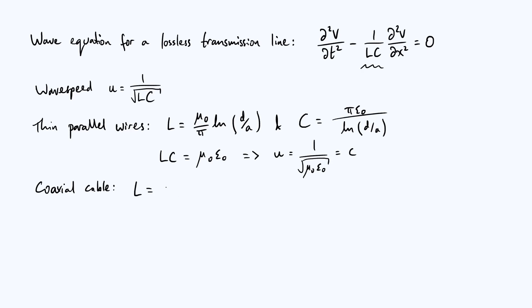The inductance of a coaxial cable is μ₀/(2π) natural log of b over a where b and a are the radii of your outer and inner cylindrical conductors respectively and the capacitance per unit length is 2πε₀ divided by log of b over a.